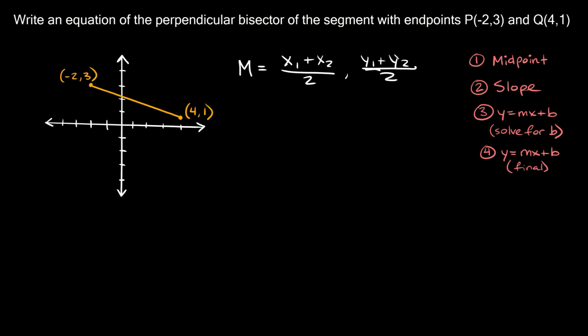The first part gives us the x-coordinate and the second part gives us the y-coordinate. Let's label these — this point is x₁, y₁ and this one is x₂, y₂.